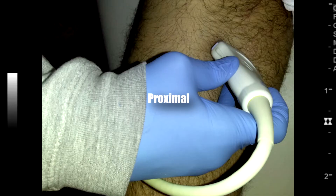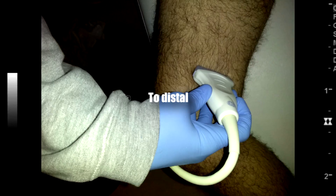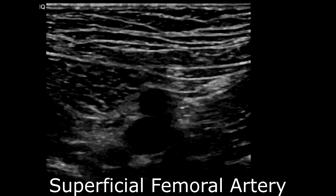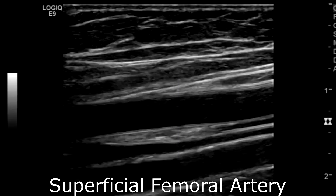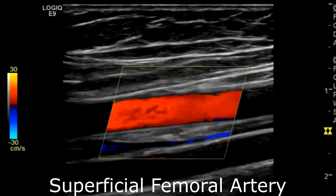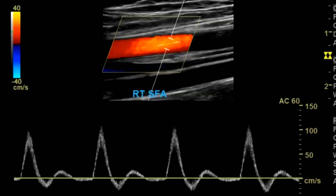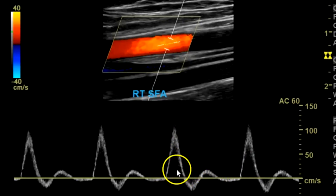Then you go down to the superficial femoral artery with transverse images, with and without color. Sagittal images without color, with color, and with spectral Doppler. Very nice triphasic waveform — very clean spectral window.